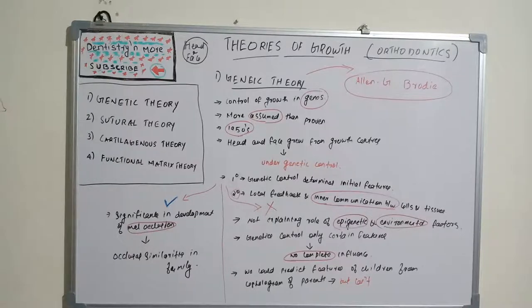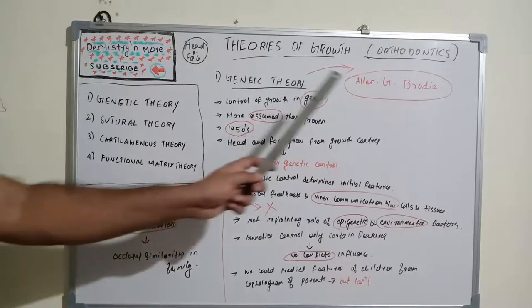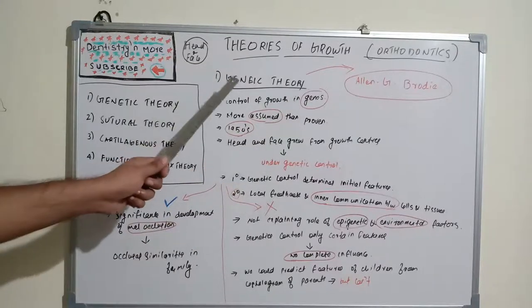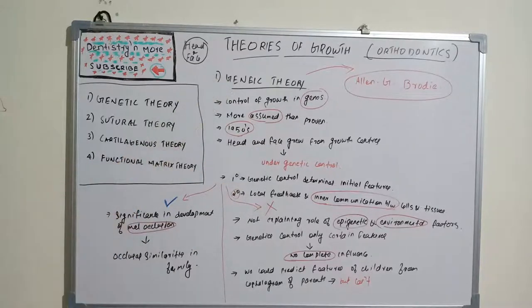One of the first theory is genetic theory, given by Alan G. Brody in the 1950s. According to this theory, the growth was controlled by genes. As the name suggests, the control of growth is on genes.